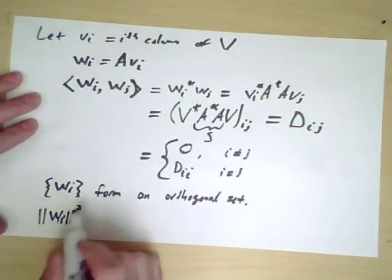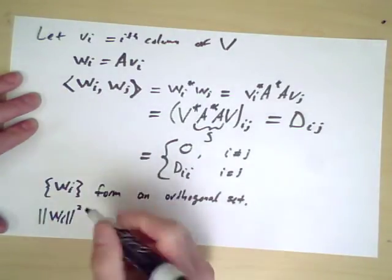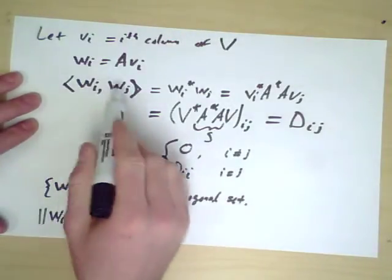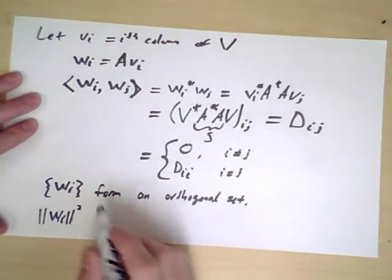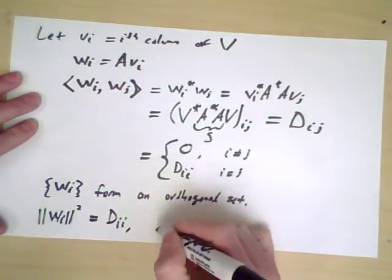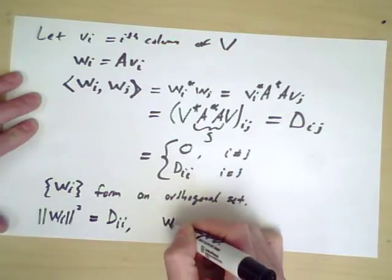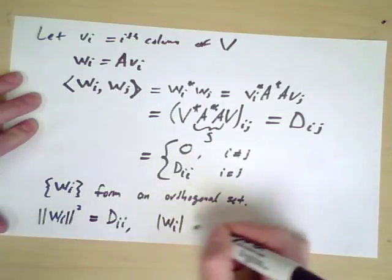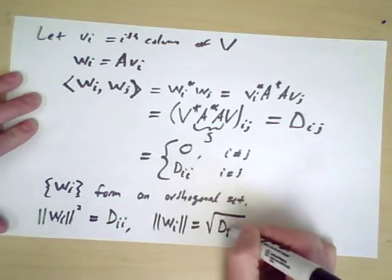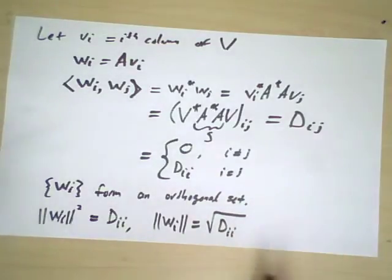But I do know their lengths. So WI squared is of course WI star WI, because the length squared is the inner product of a vector with itself. So this is simply DII. And that tells me that WI in length is the square root of DII.